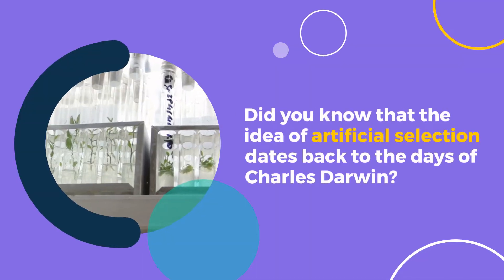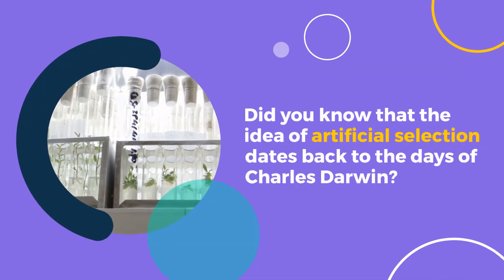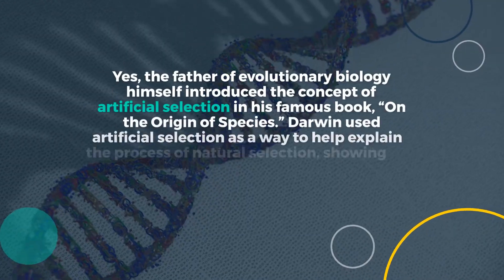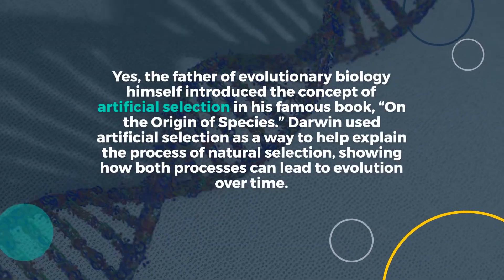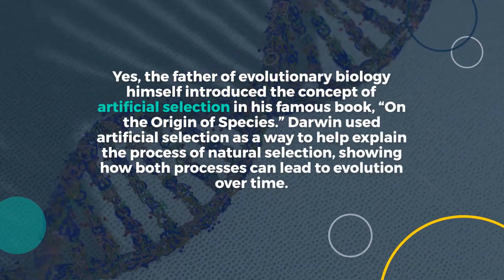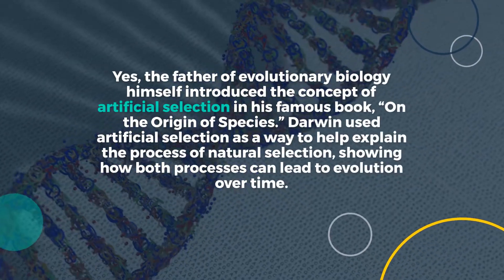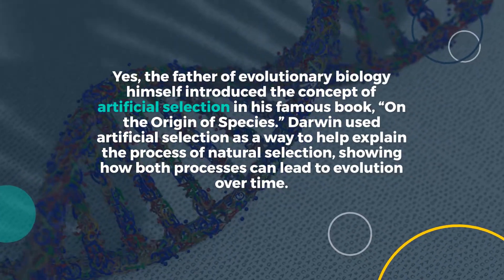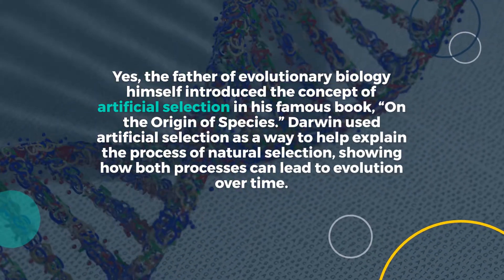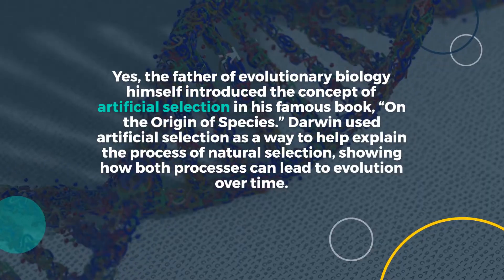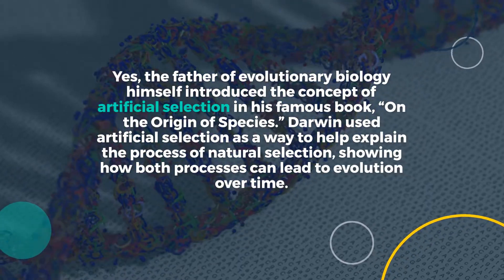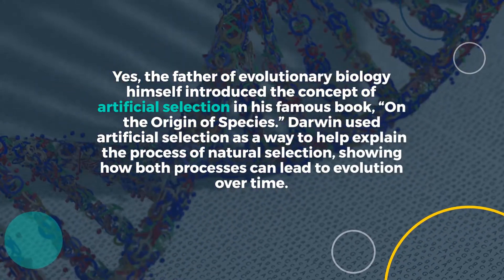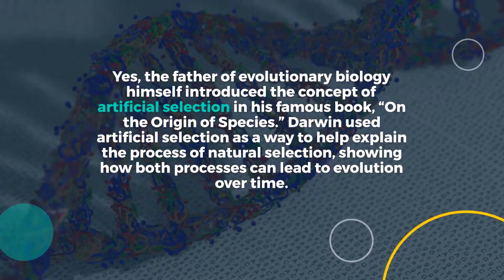Did you know that the idea of artificial selection dates back to the days of Charles Darwin? Yes, the father of evolutionary biology himself introduced the concept of artificial selection in his famous book, On the Origin of Species. Darwin used artificial selection as a way to help explain the process of natural selection, showing how both processes can lead to evolution over time.